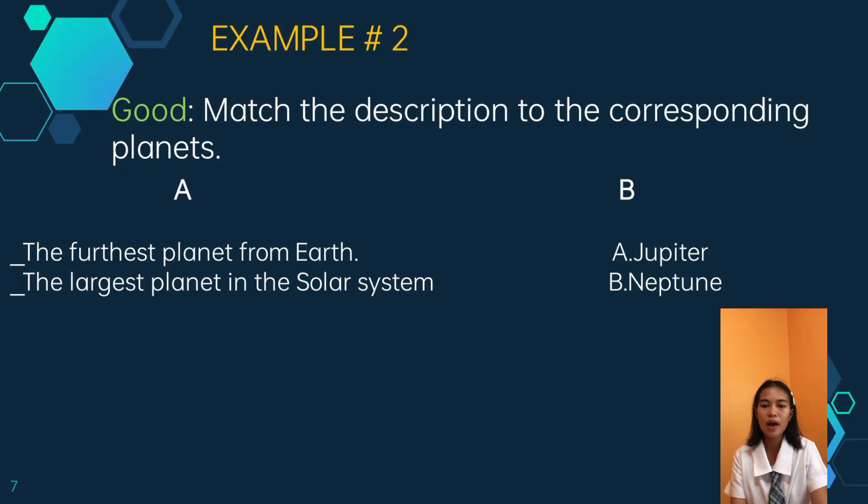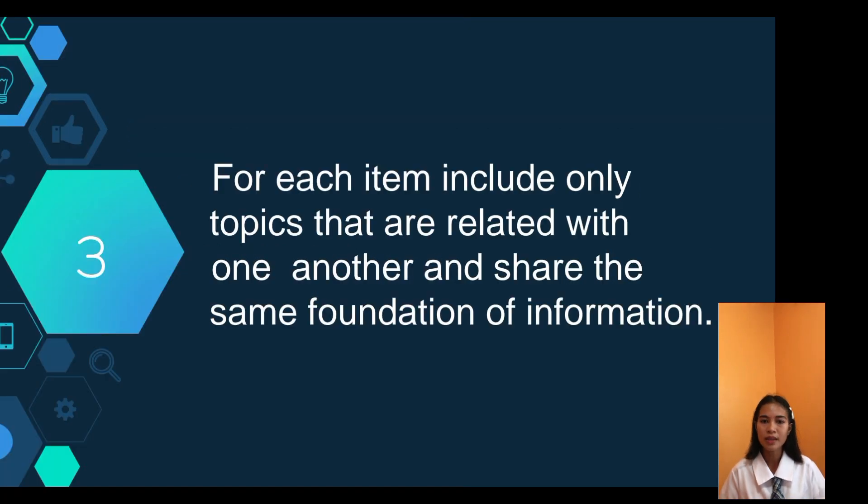For example, column 1 are the descriptions of the planet, and column 2 are the different planets. It is easy to identify or match column 1 to column 2, since each set is easy to analyze or understand, so that students will not be confused at all.